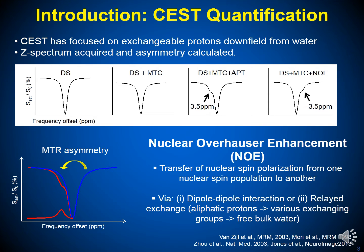In the relayed exchange pathway, magnetization transfers from the aliphatic protons to rapidly exchanging groups and then to the free bulk water protons, which is detected through CEST imaging. Due to this NOE effect, care should be taken when interpreting the measured APT signal using MTR asymmetry analysis, as APT signal from MTR asymmetry could be underestimated.